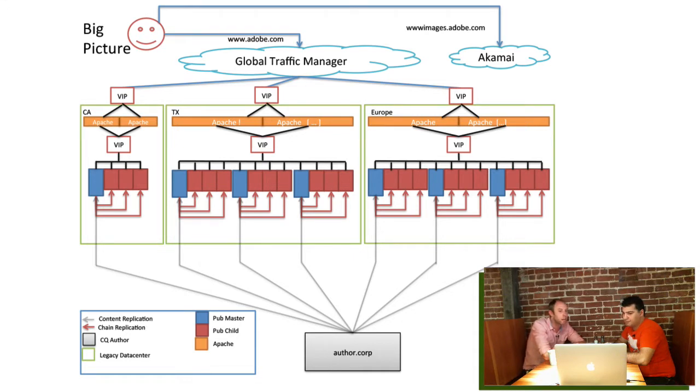The unique thing about our published instances is that we have what's called chain replication. We did not want to send the same binary to n number of published instances. We publish from author to one published instance which is deemed a master, and that master instance will then re-replicate that content to about four or five other instances. It minimizes the amount of time it takes to replicate content, so instead of pushing a 10 megabyte PDF say 30 times, we may only push it five or six times.